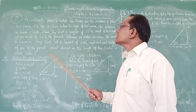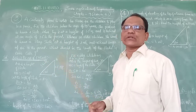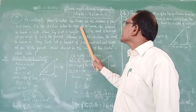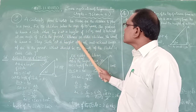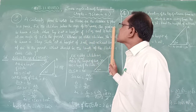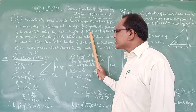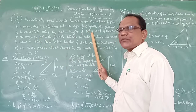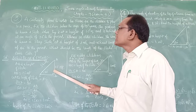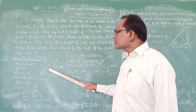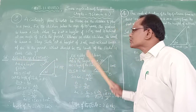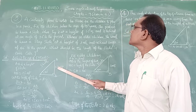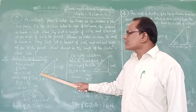A contractor plans to install two slides — that means two cases. The first slide is for children below age 5 years, and the second is for elder children. For Case 1, the first slide height is 1.5 meters and it is inclined at 30 degrees to the ground. So here I have given two cases: Case 1 and Case 2. Case 1 is for below age 5 years children, with height 1.5 meters at an angle of 30 degrees.